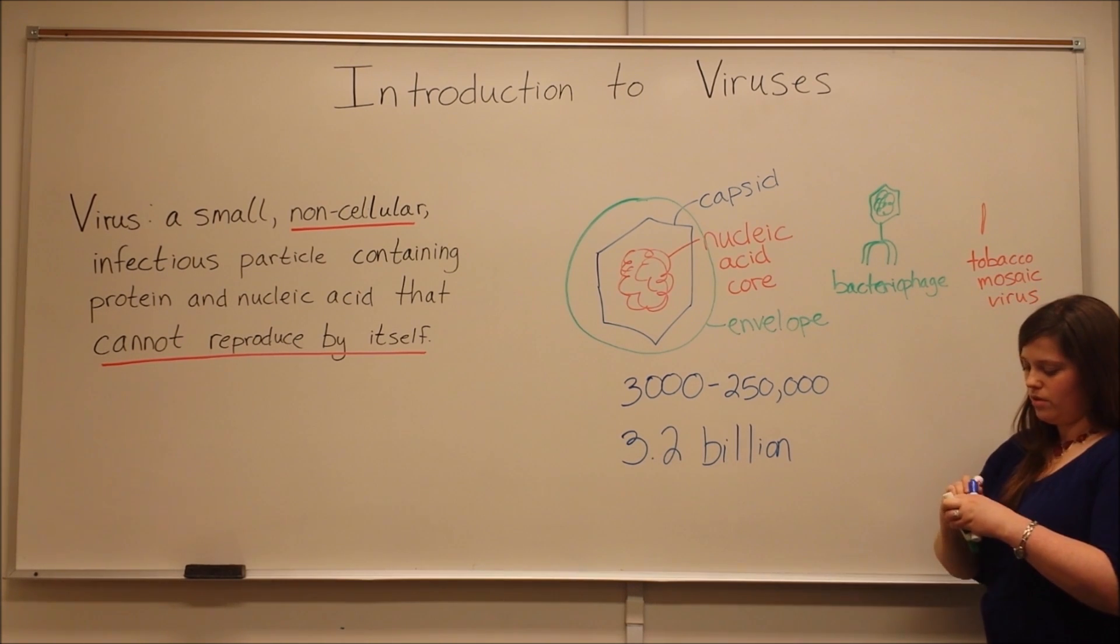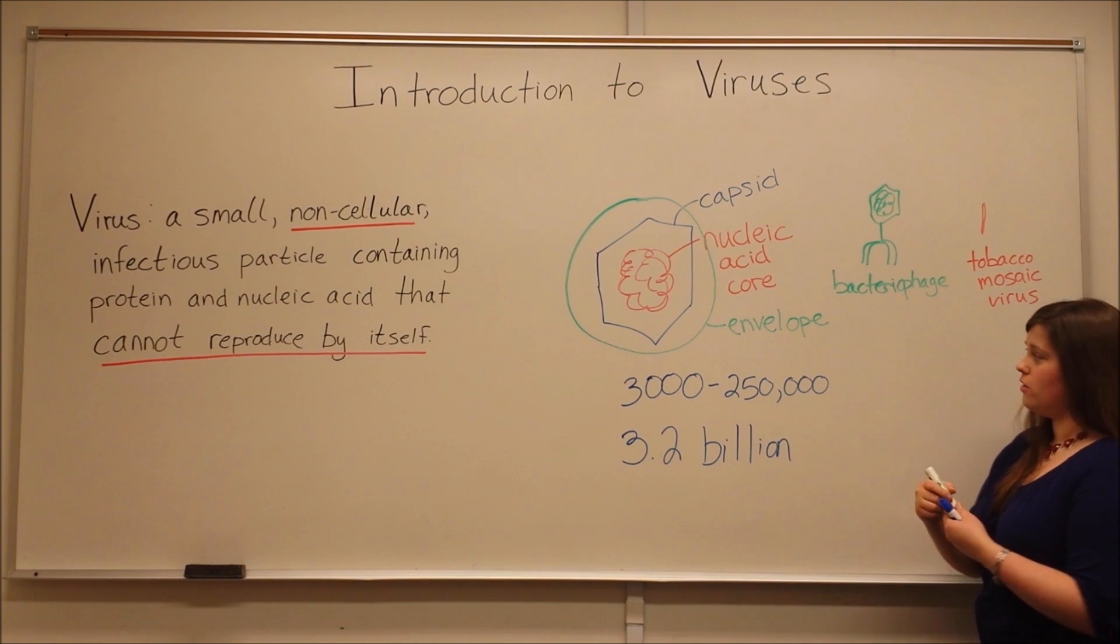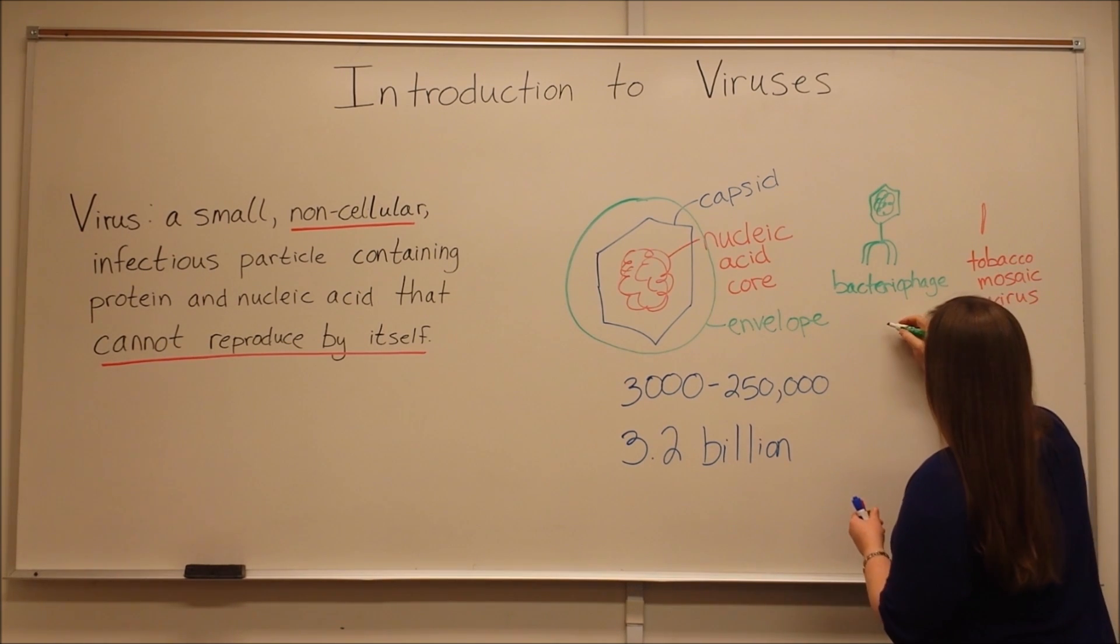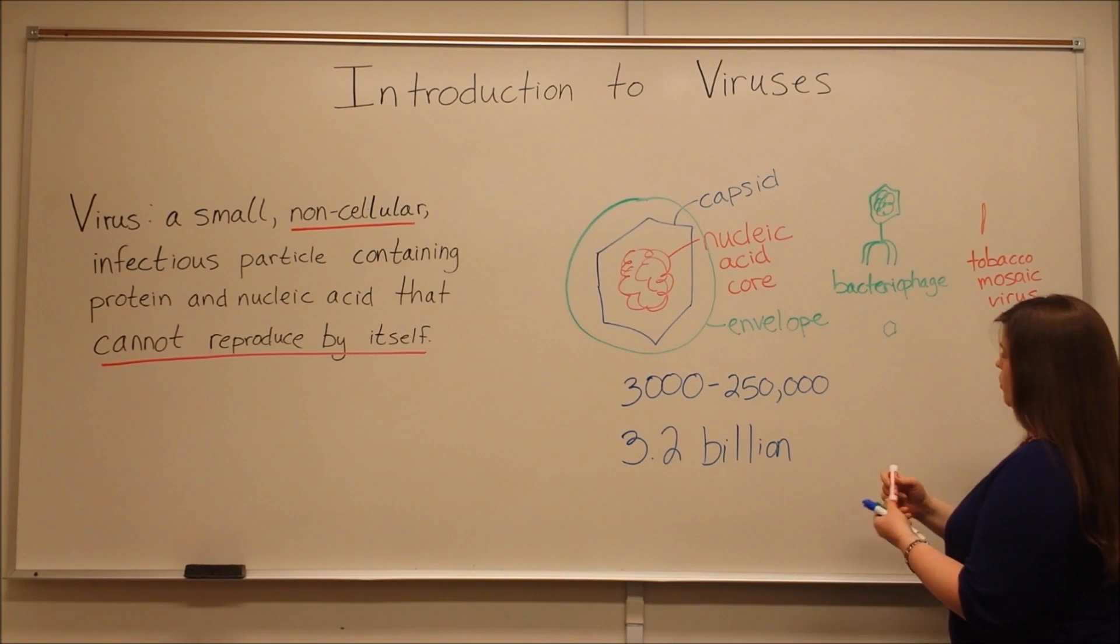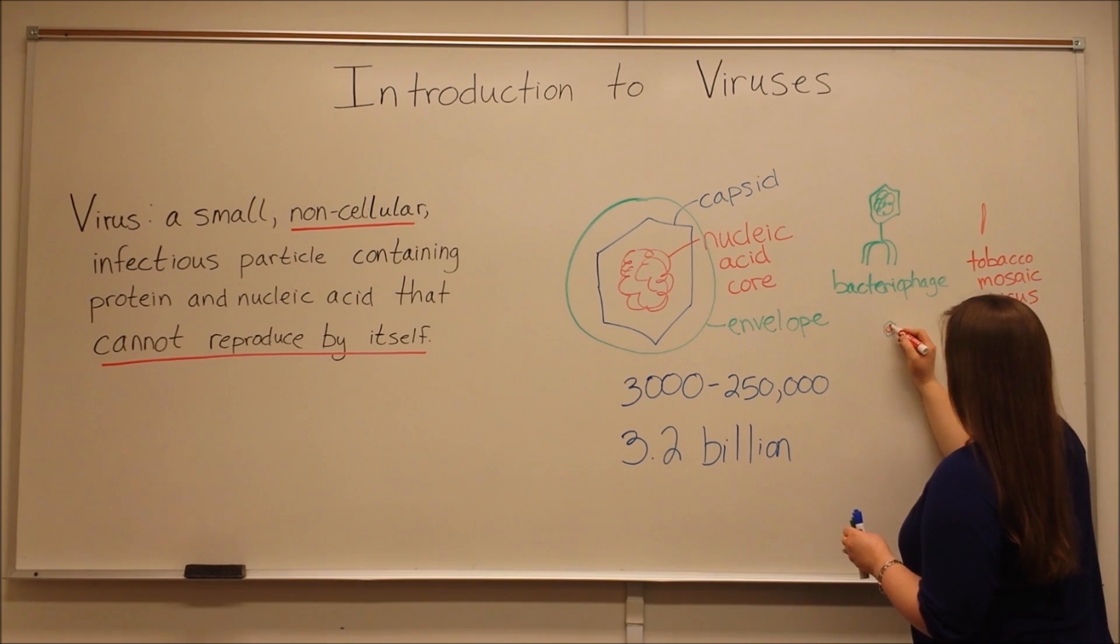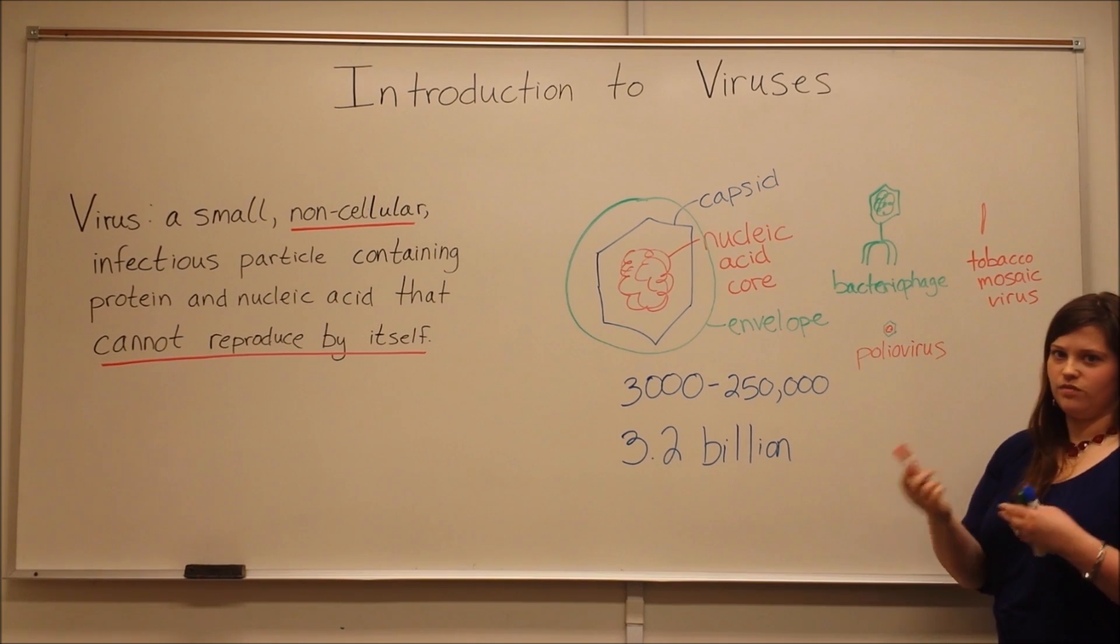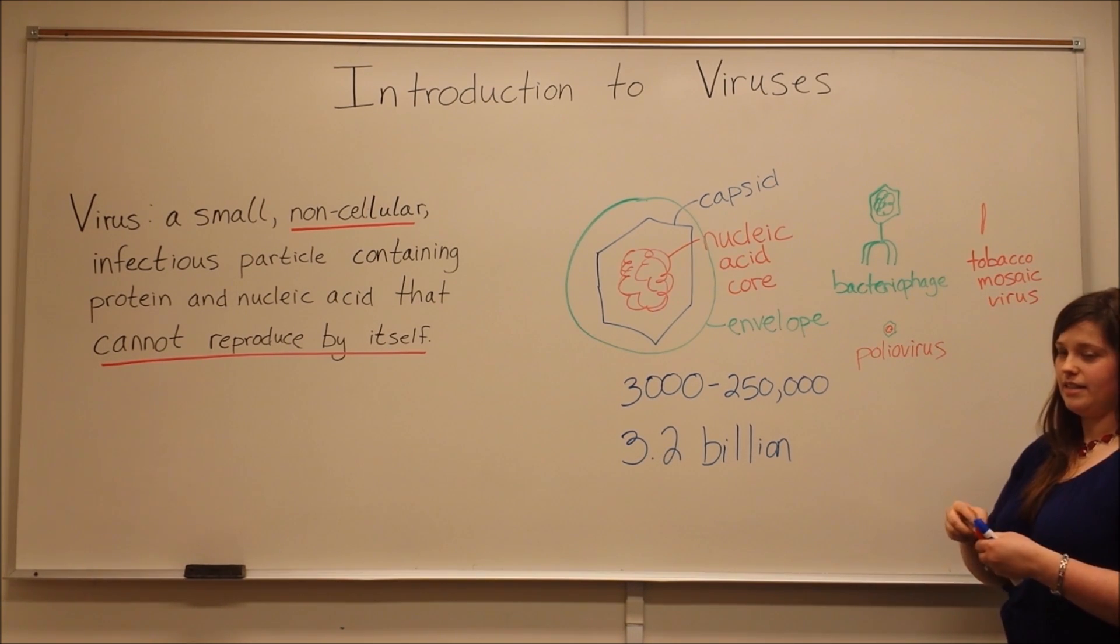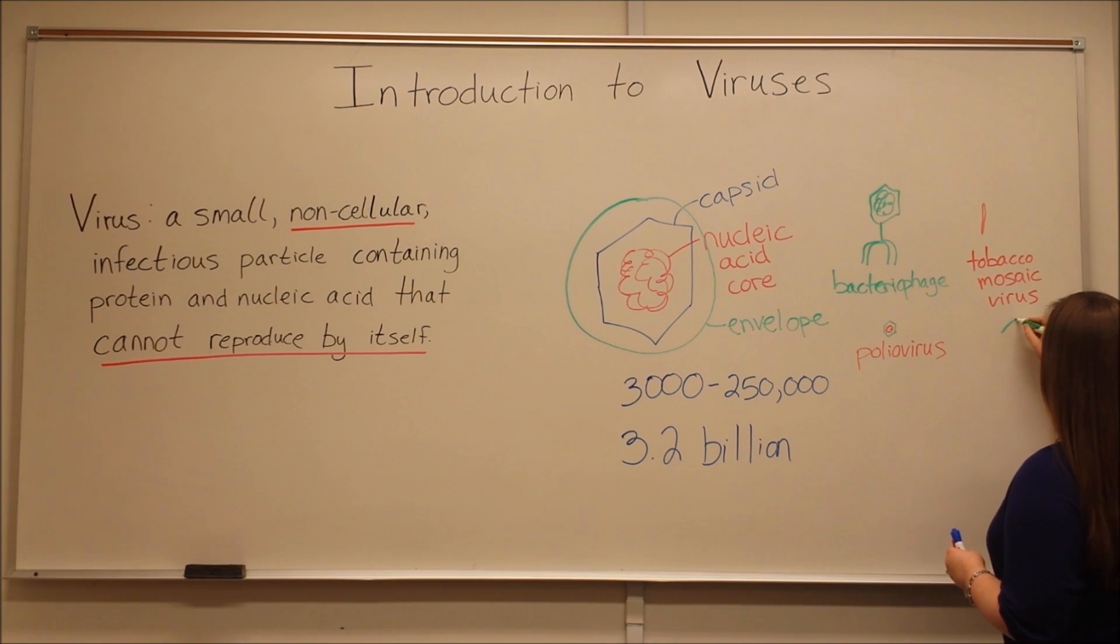Another example of a shape that a virus can take is poliovirus. Poliovirus is quite small. It's still got that capsid structure with the nucleic acid core, but it's much smaller than some of these other viruses. Another example of a different shape that a virus can take is Ebola virus. Ebola virus sort of forms this long loop-like structure of the capsid with the nucleic acid inside it.